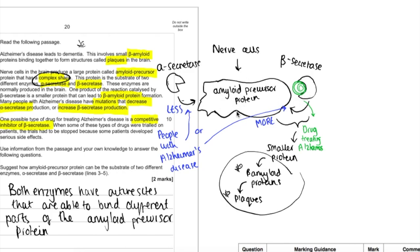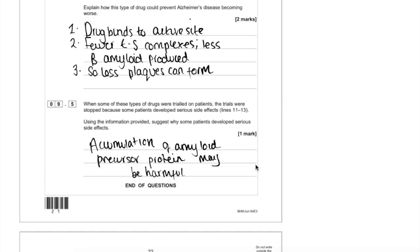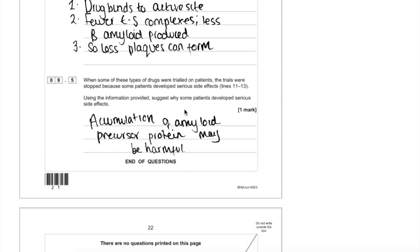It's preventing this amyloid precursor protein from being hydrolyzed and broken down, preventing these beta amyloid proteins being produced. There's lots of different ways you could go with this. That's just one I've chosen. Accumulation of amyloid precursor protein might be harmful, but I'll show you some of the other things you could have put too.